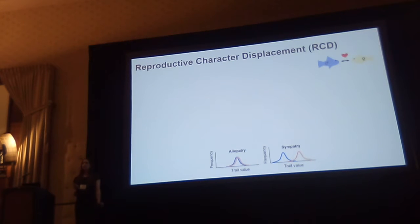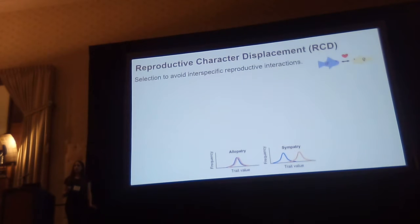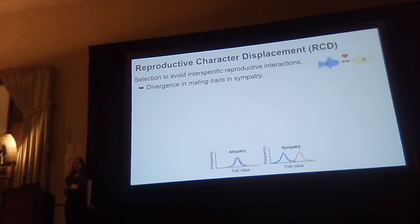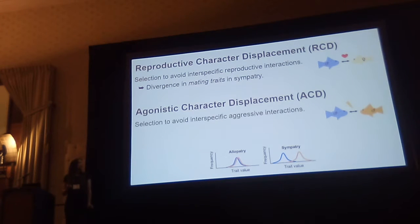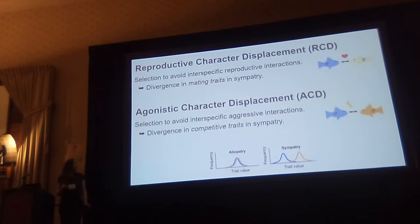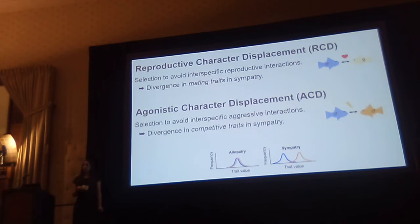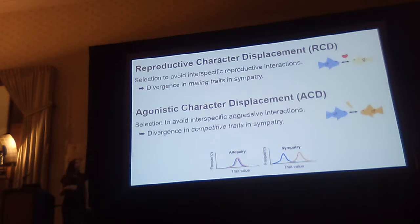Today I'm going to talk about two different types of character displacement. The first is reproductive character displacement, which describes selection to avoid maladaptive interspecific reproductive interactions and can lead to divergence in mating traits in sympatry. Similarly, agonistic character displacement describes selection to avoid maladaptive interspecific aggressive interactions, and it can lead to divergence in competitive traits in sympatry. Agonistic character displacement has only been recognized as a really distinct evolutionary phenomenon, distinct from reproductive character displacement, in the last decade or so.